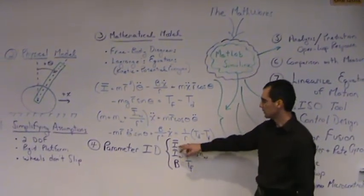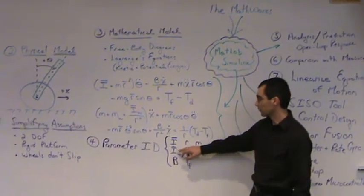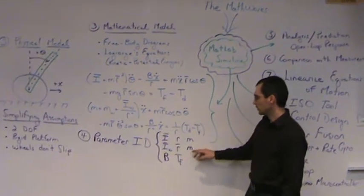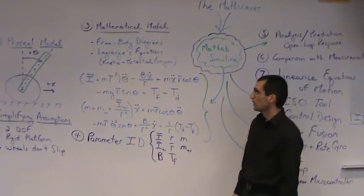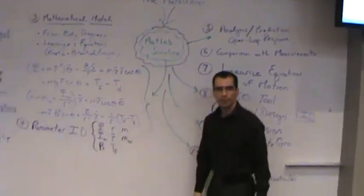Some of the parameters are the inertia of the wheel, the inertia of the pendulum, the radius, the damping, torque, and mass. From those equations, we start to use MATLAB and Simulink.